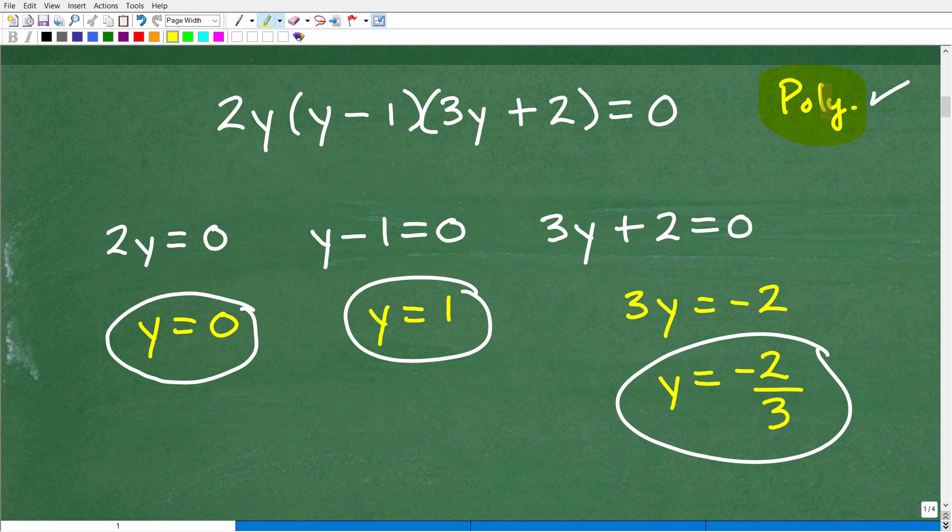Now, the great thing about this particular problem is that it's broken up in its factors. In other words, I have this term being multiplied by this term being multiplied by this term. So you got one factor, this times this times this, and it's equal to 0.